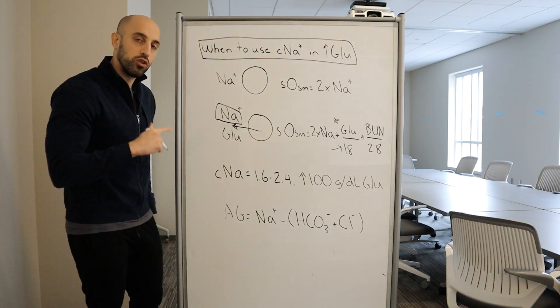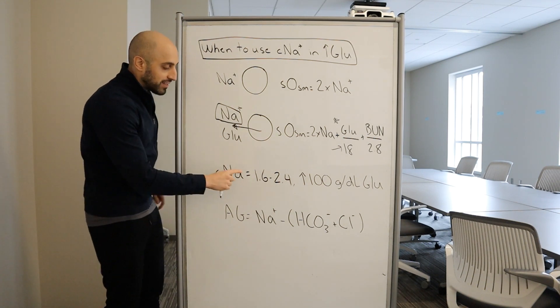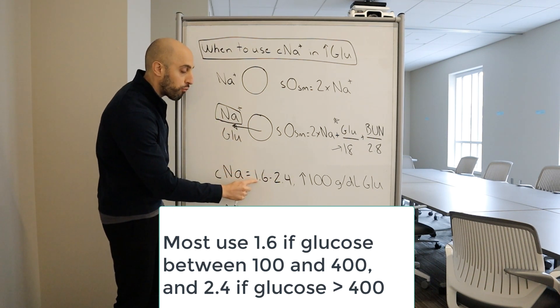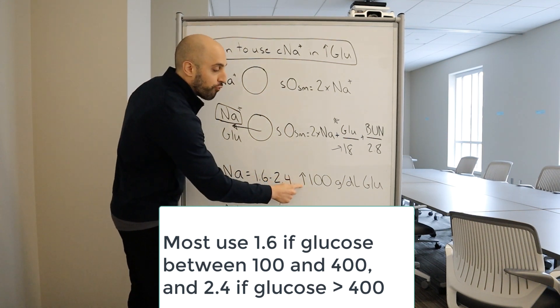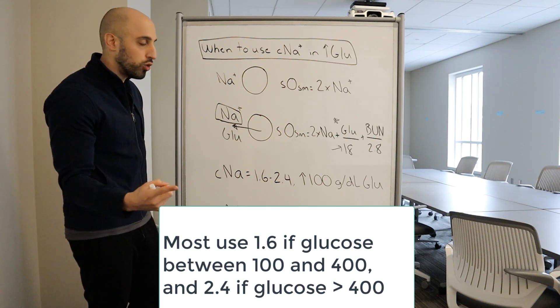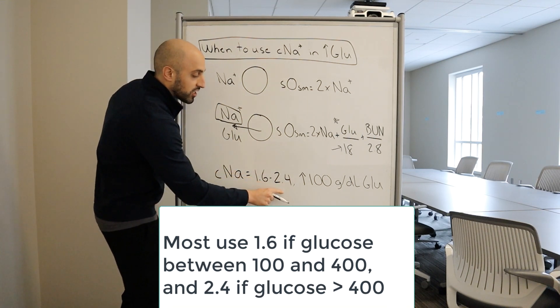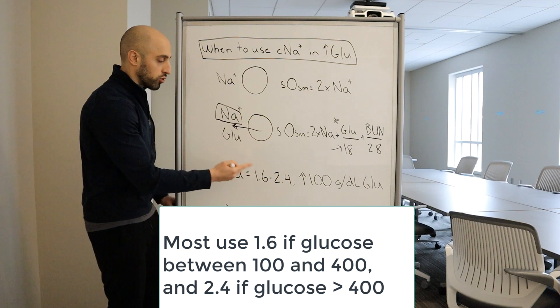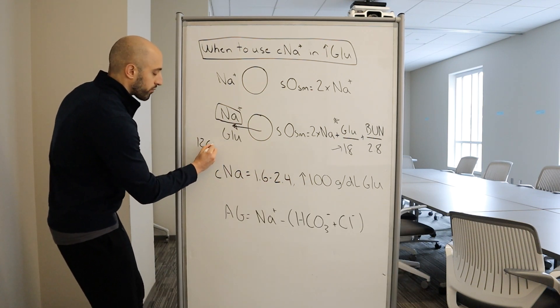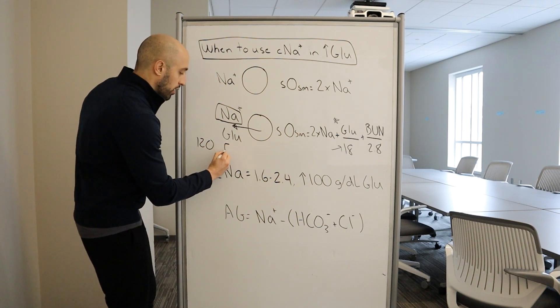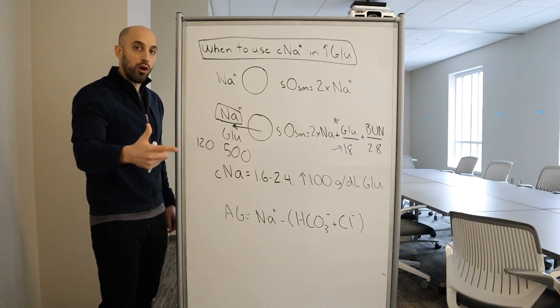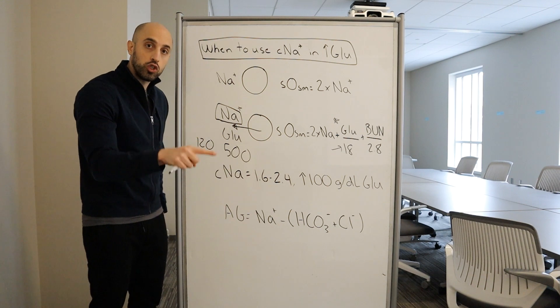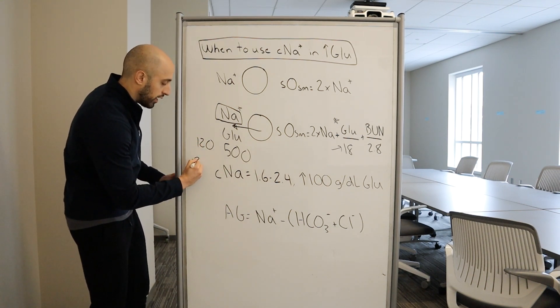In 1973, one study reported a correcting factor of 1.6 milliequivalents per liter of sodium for every rise in 100 grams per deciliter of glucose. In 1999, it suggested that you should correct by 2.4. So somewhere in between this range, you should correct the sodium. So for example, if the sodium was 120 and the glucose, let's do something easy, was 500, that means the glucose is 400 above what you expect. And let's just say we're going to correct by a factor of 2 for every 100. So 2 times 4 equals 8. So now your corrected sodium is 128.